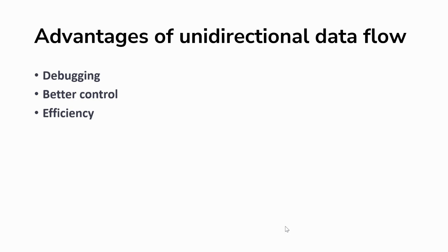The third and last advantage is efficiency. As libraries are aware of the limitations and specifications of unidirectional flow, extra resources are not wasted and the process will be efficient.